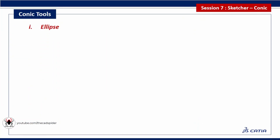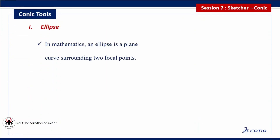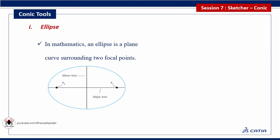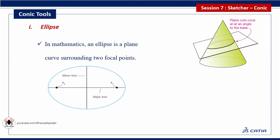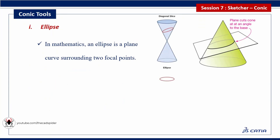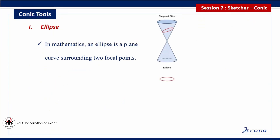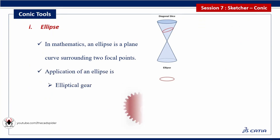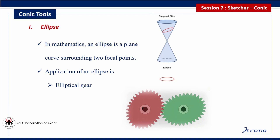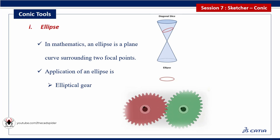The first tool is ellipse. In mathematics, an ellipse is a plane curve surrounding two focal points. The plane cuts the cone at an angle to the base. Applications of an ellipse include elliptical gear and tunnel.